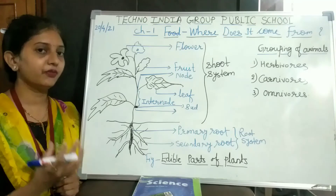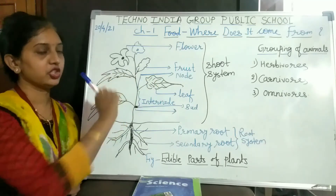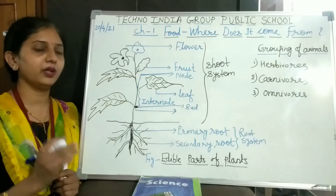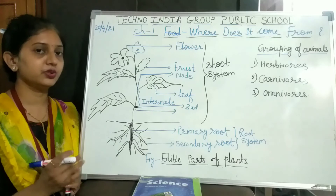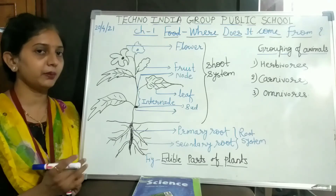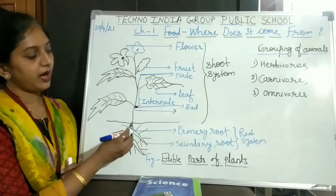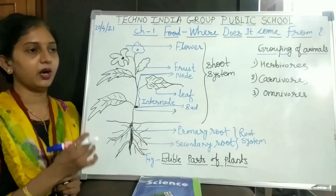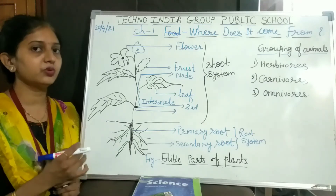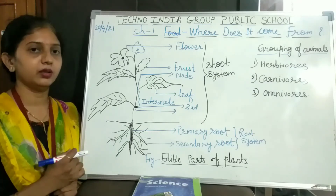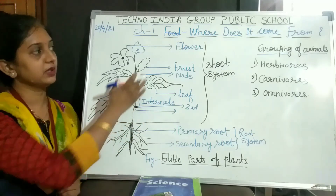Mango is a fruit. Spinach and fenugreek — these are the leaves which we use as vegetables in our diet. Groundnut — these are the seeds which we use in our diet. These are the different edible parts of plants.